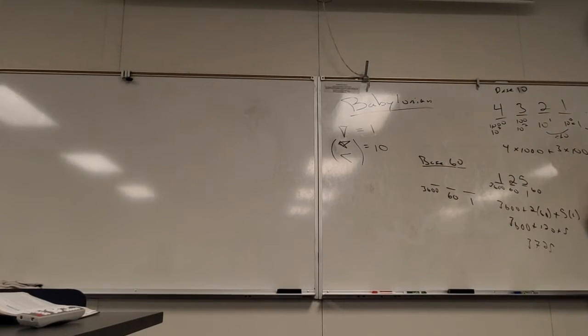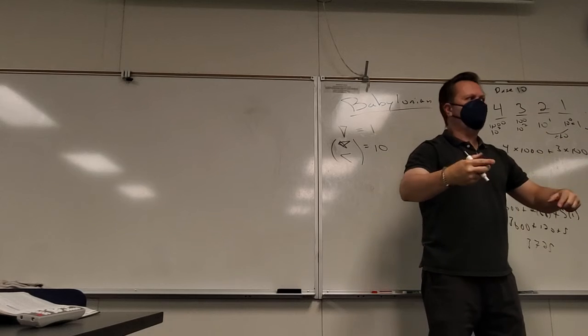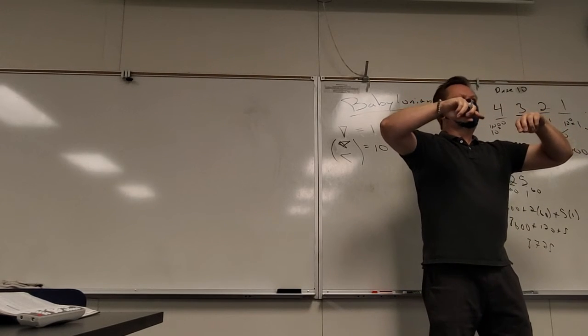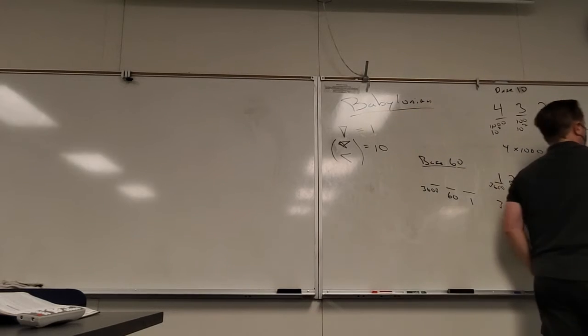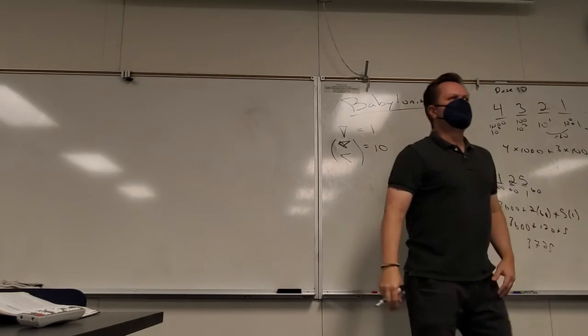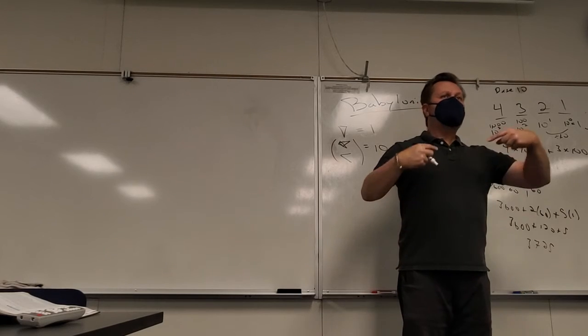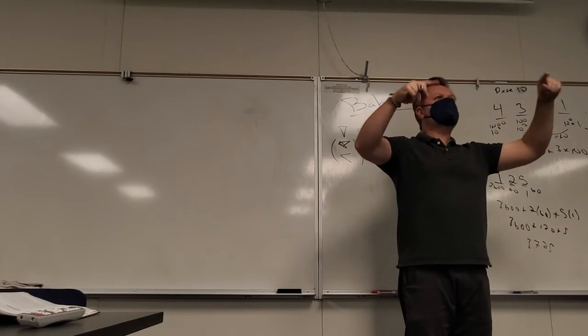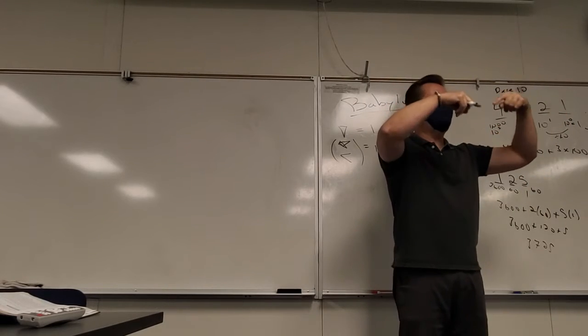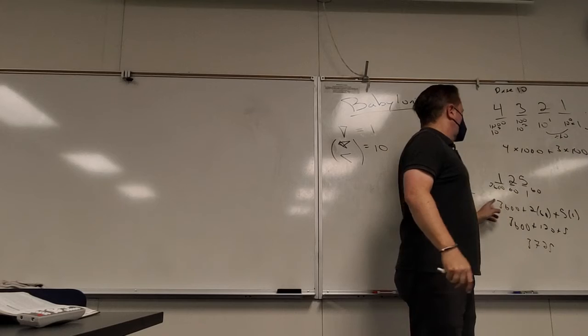How would I construct what that number means to us? And this number, I have five whats? What place is this in? The ones. What place is this in? This is 60. What place is that in? Thirty-six hundred. So I have one thirty-six hundred plus two sixty plus five ones. And then you can put it together.